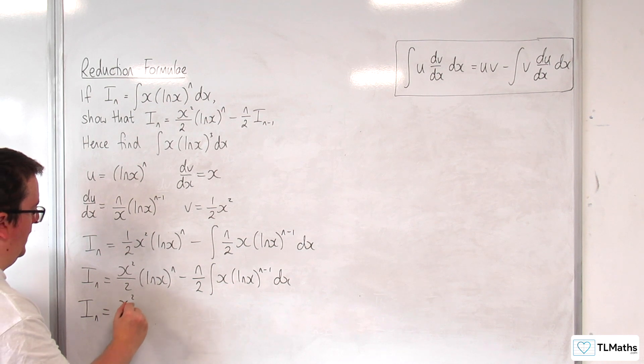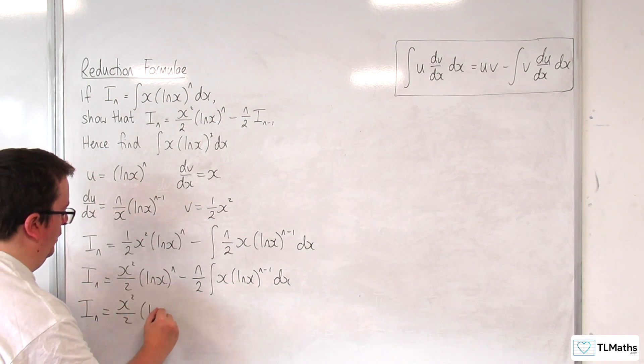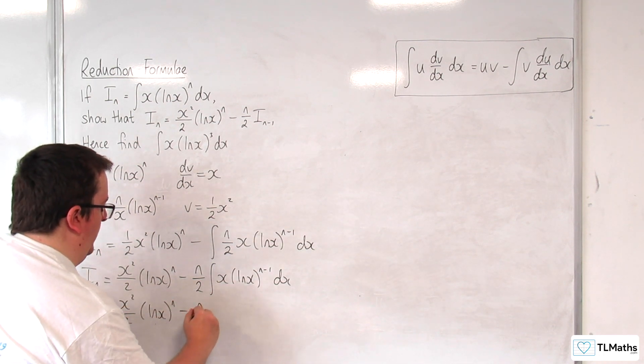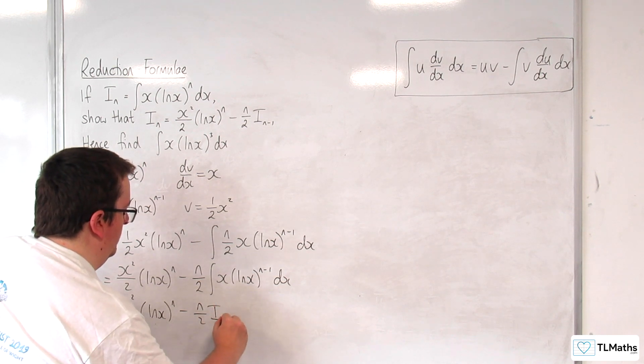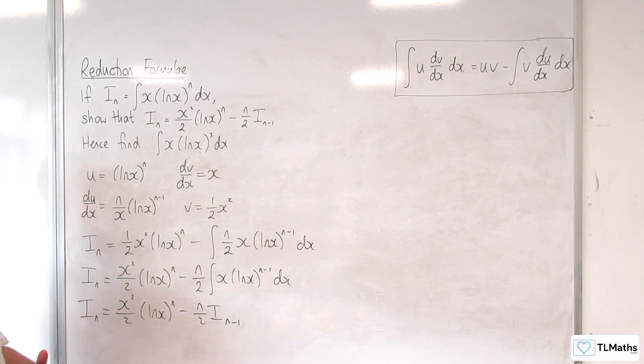So we've got i_n is x squared over 2 log of x to the n, take away n over 2 times i_n minus 1. Which is what I needed to get to there.